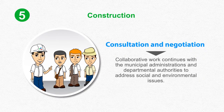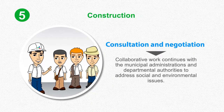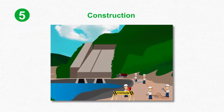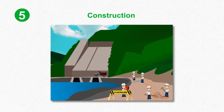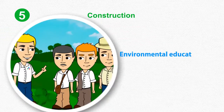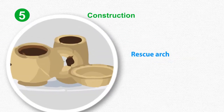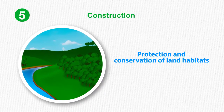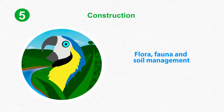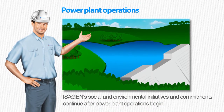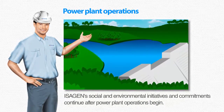Collaborative work continues with the municipal administrations and departmental authorities to address social and environmental issues. Programs and initiatives are started while construction work is being carried out, and these include environmental education projects, support for public health, rescue archaeology, protection and conservation of land habitats, and flora, fauna and soil management. ISAHIN's social and environmental initiatives and commitments continue after power plant operations begin.